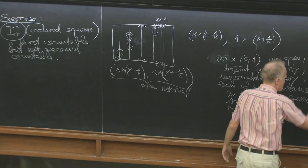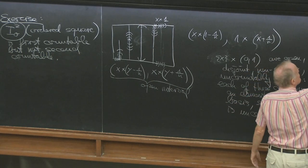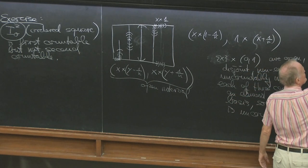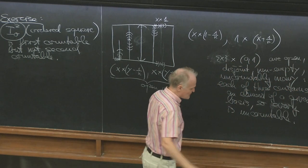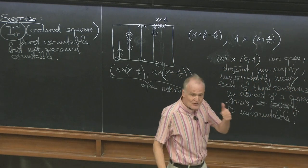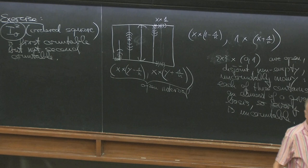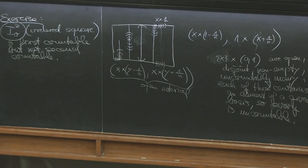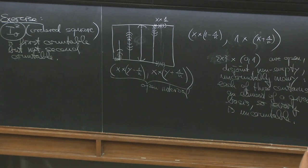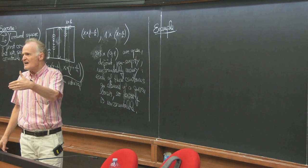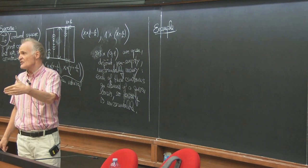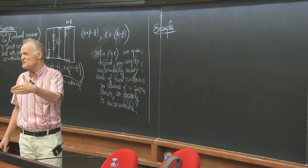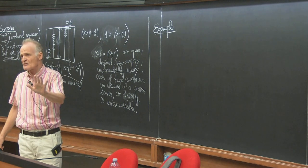Now we make another example. We proved last time that the ordered square is connected, but not path connected. It is very far from path connected — there are an uncountable number of path components.